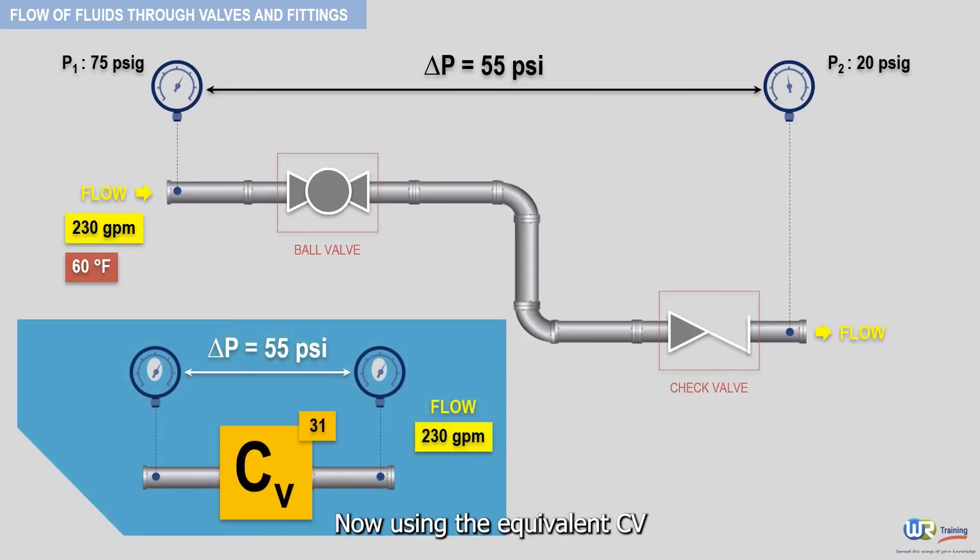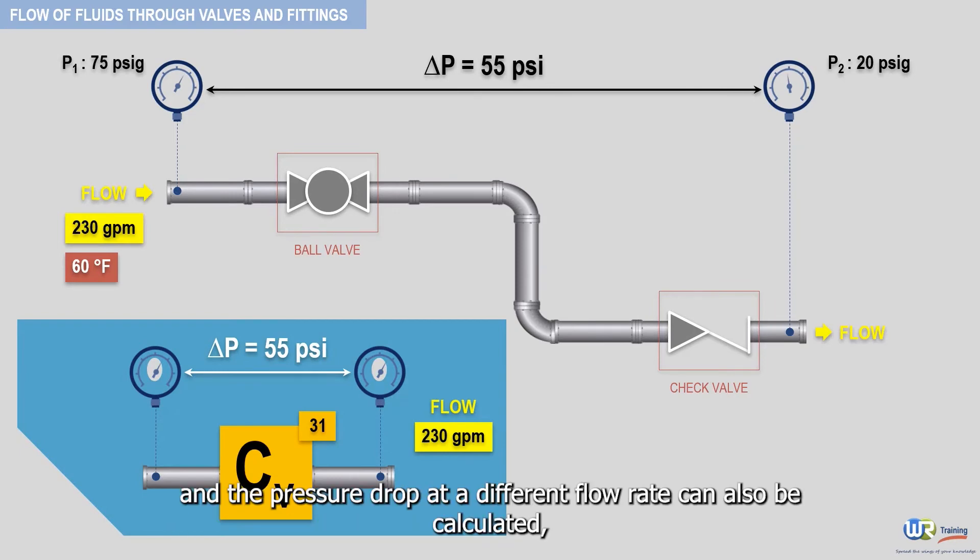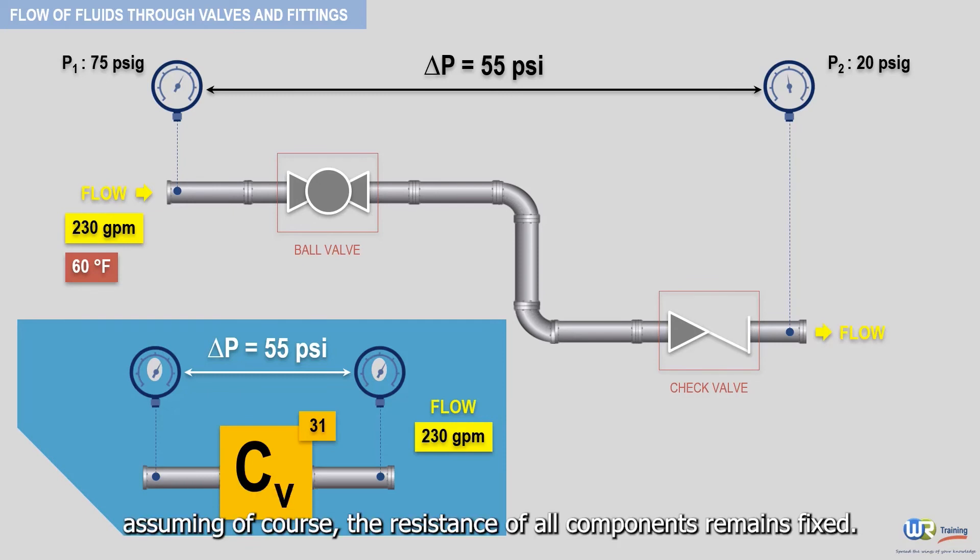Now, using the equivalent CV, the flow rate at a different pressure drop can be calculated, and the pressure drop at a different flow rate can also be calculated, assuming of course the resistance of all components remains fixed.